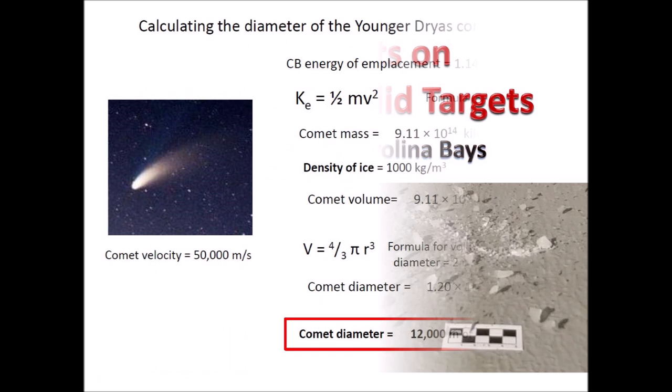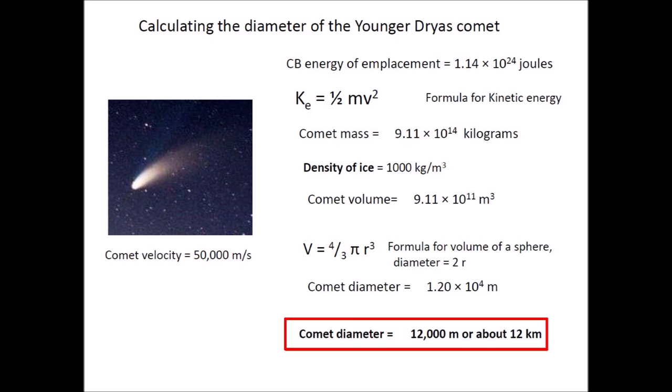One of my recent videos calculated the diameter of the Younger Dryas Comet, applying the law of conservation of energy by using estimates of the energy of the secondary glacier ice impacts that made the Carolina Bays and the Nebraska Rainwater Basins. The size of the comet was surprisingly large — about 8 kilometers in diameter for a comet with the density of rock, and 12 kilometers for a comet with the density of water.